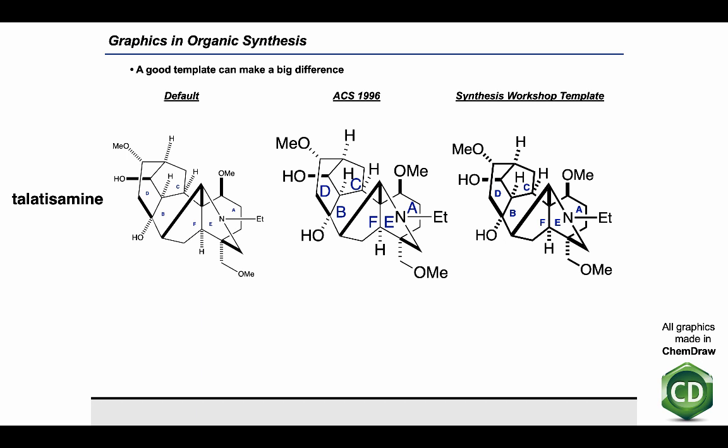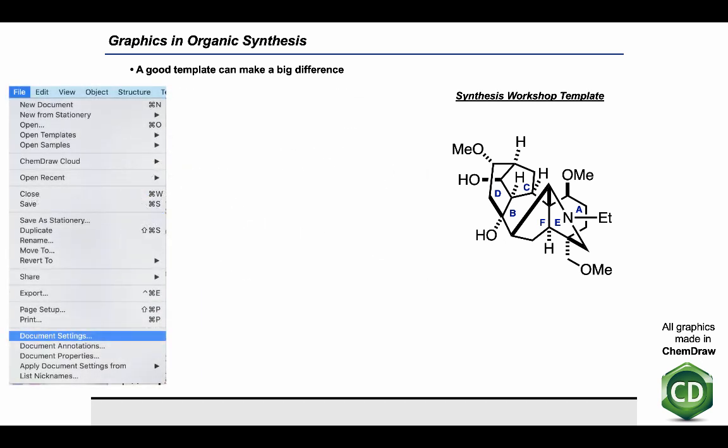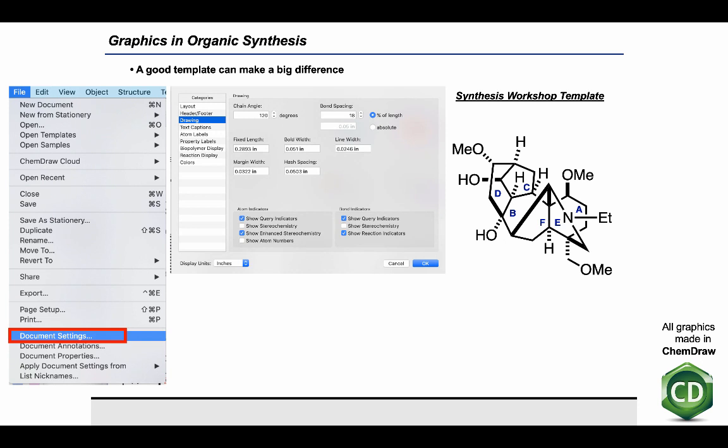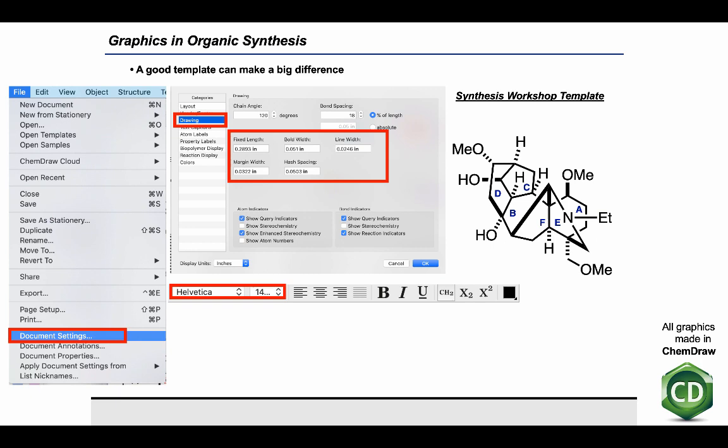If we want to think about how to make that even better looking, this is an example of the sort of template that I like to use on Synthesis Workshop. And if you want to make a graphic that looks like this, we can start by going in ChemDraw to file and document settings. And we'll select that. And this generates a list of categories. From that list, we'll select drawing. And here, what's important is to fix these bond lengths and widths so that they match these values here. So with that, then we can generate the custom template that's used in Synthesis Workshop. And then, just as a final touch, I think it's a good idea to also make sure that our text size and font matches the Helvetica 14 to make it look like this.